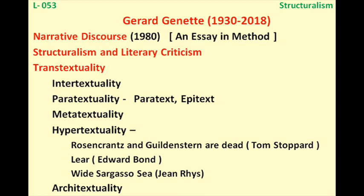There are different kinds of transtextuality. The first is intertextuality, where one work has a reference to another work — one text has a relation to another text. The second is paratextuality. As the name suggests, this involves a connection or relation within the same book — from one part to another.